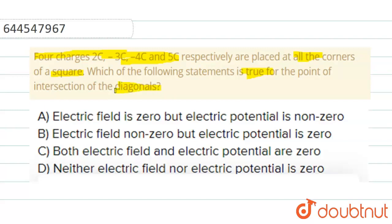Options are given such that in the first option, it is said that electric field is equal to 0 but electric potential is not equal to 0. In the second option, electric field is non-zero but electric potential is 0. Third option, both electric field and potential are 0. And fourth option, neither electric field nor electric potential is equal to 0.